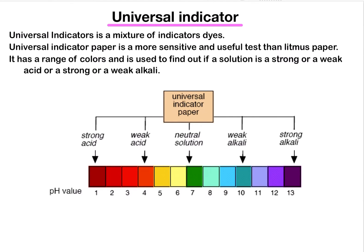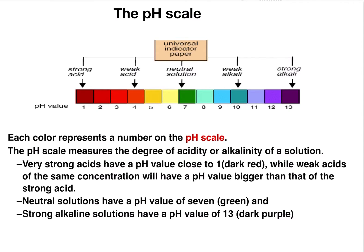The pH scale runs from one to thirteen. Seven is neutral; values of six, five, four, three, two, and one are acidic solutions, while eight, nine, ten, eleven, twelve, and thirteen are basic solutions. With the pH scale we can find out how strong an acid or base is, or whether a substance is neutral — something litmus paper alone cannot determine.